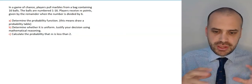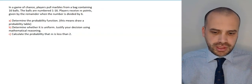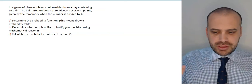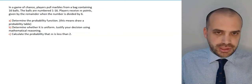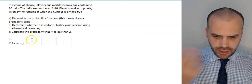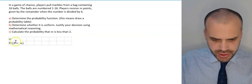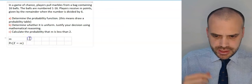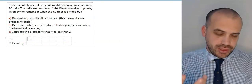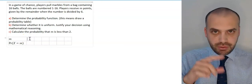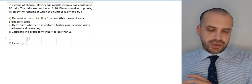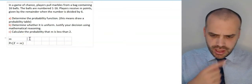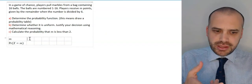The first part is to determine the probability function, which means draw the probability table. So this is what it's going to look like. Now m is the number of points you receive, which is the remainder when you divide by 6.